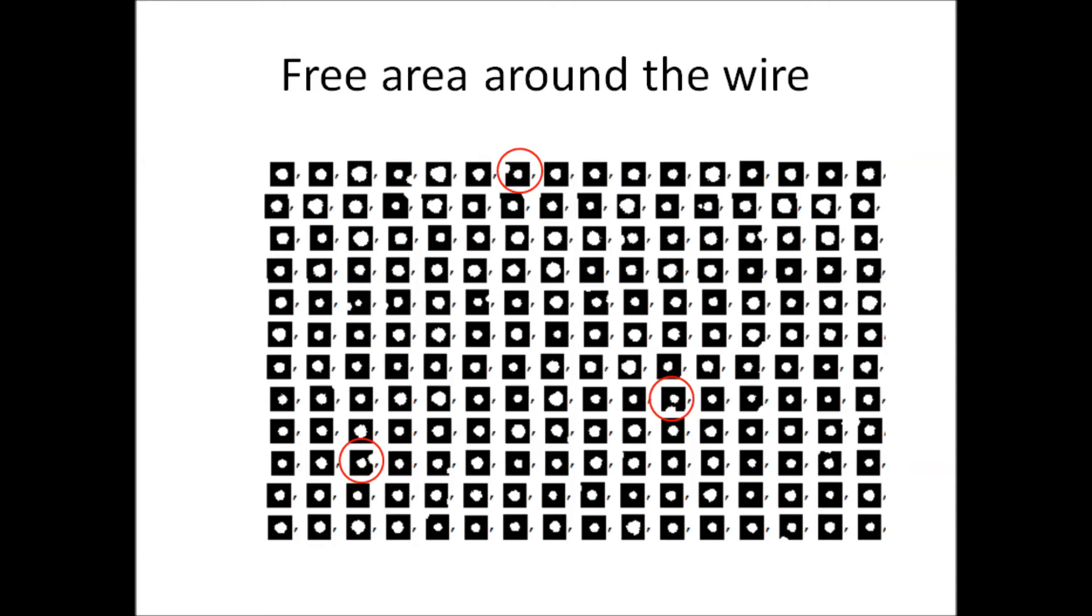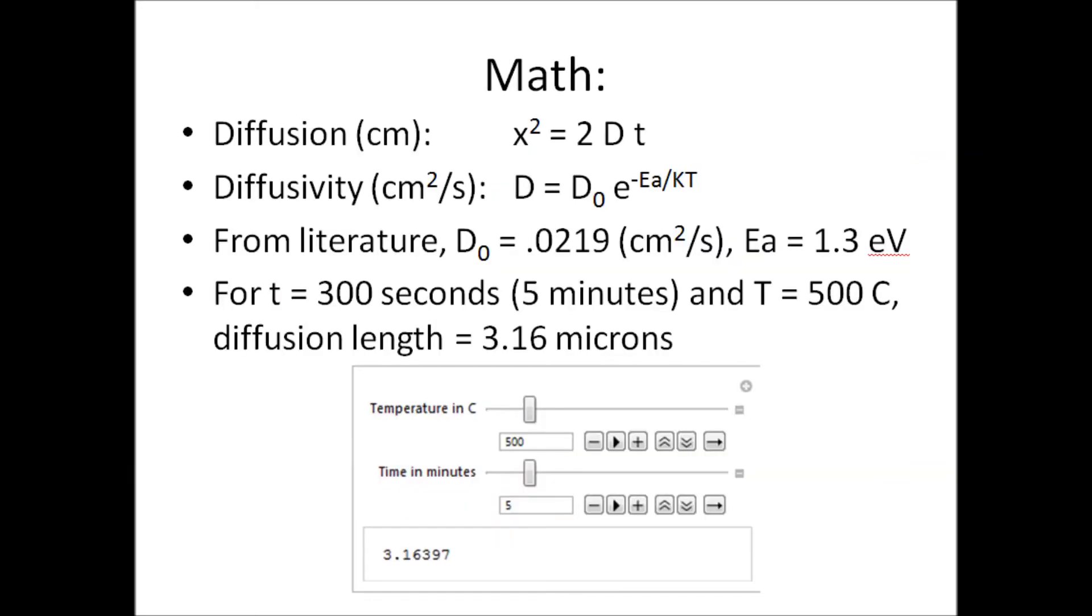I didn't just pick that area arbitrarily. It's given by a surface diffusion length that depends on time and temperature. It varies with the square root of the diffusivity constant and the square root of the time. The diffusivity constant depends on the temperature and the activation energy required for an atom to move in its lattice.